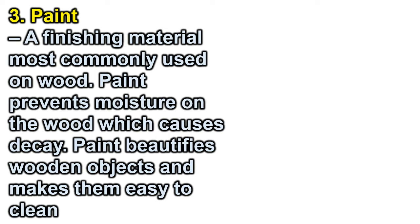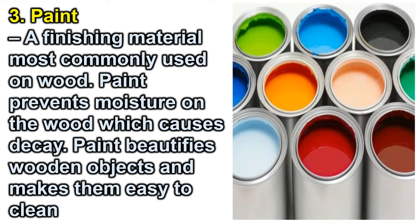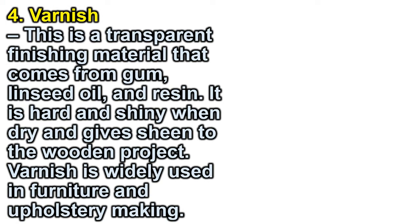Number 3 — Paint: a finishing material most commonly used on wood. Paint prevents moisture on the wood, which causes decay, beautifies wooden objects, and makes them easy to clean. Number 4 — Varnish: a transparent finishing material that comes from gum, linseed oil, and resin. It is hard and shiny when dry and gives sheen to the wooden project. Varnish is widely used in furniture and upholstery making.